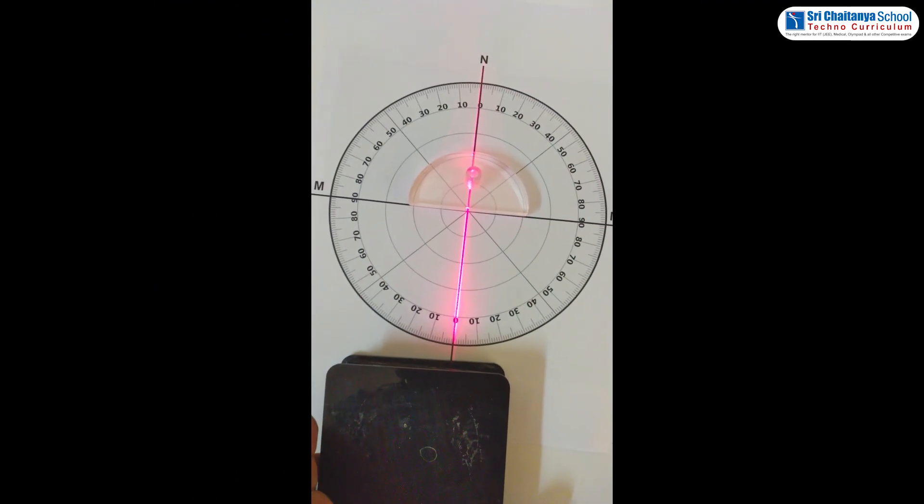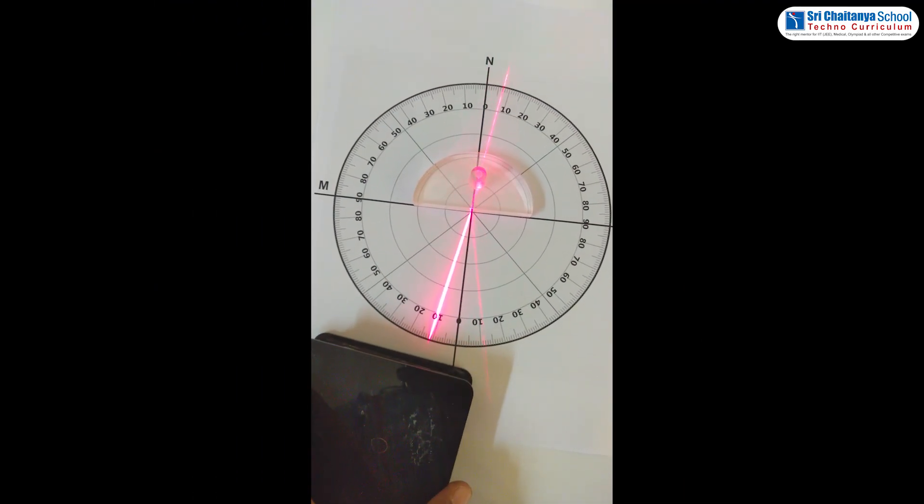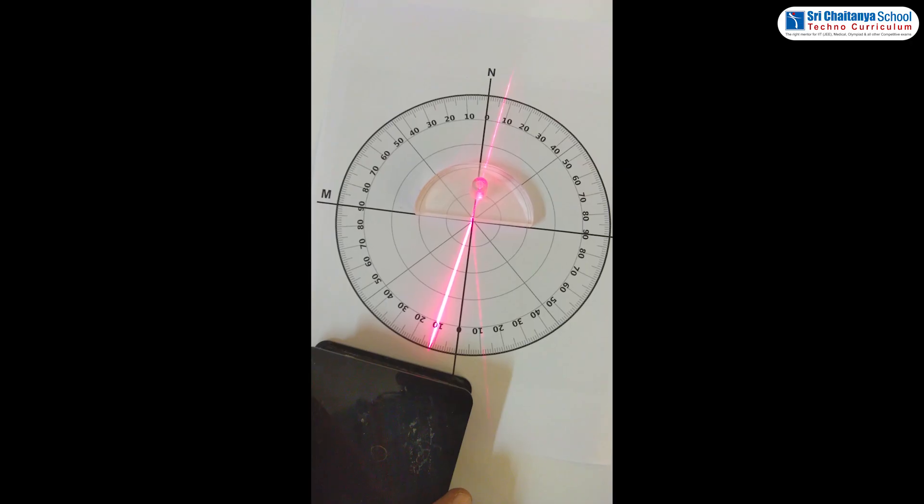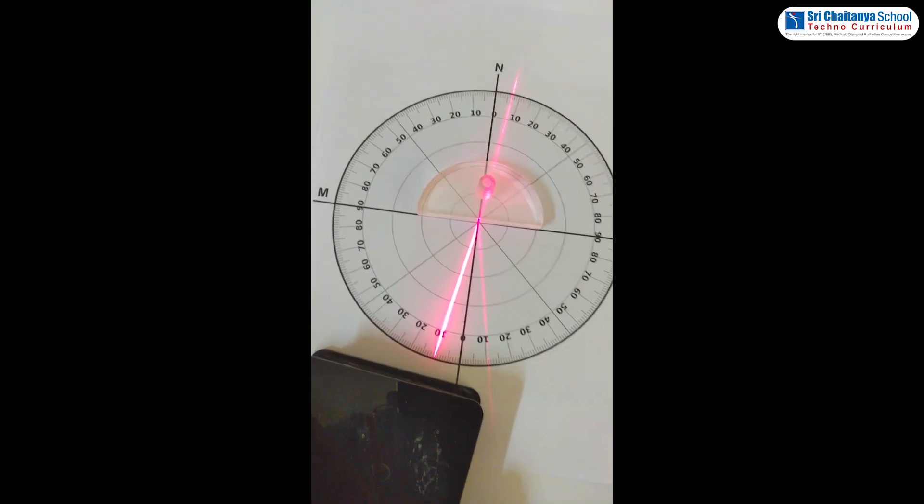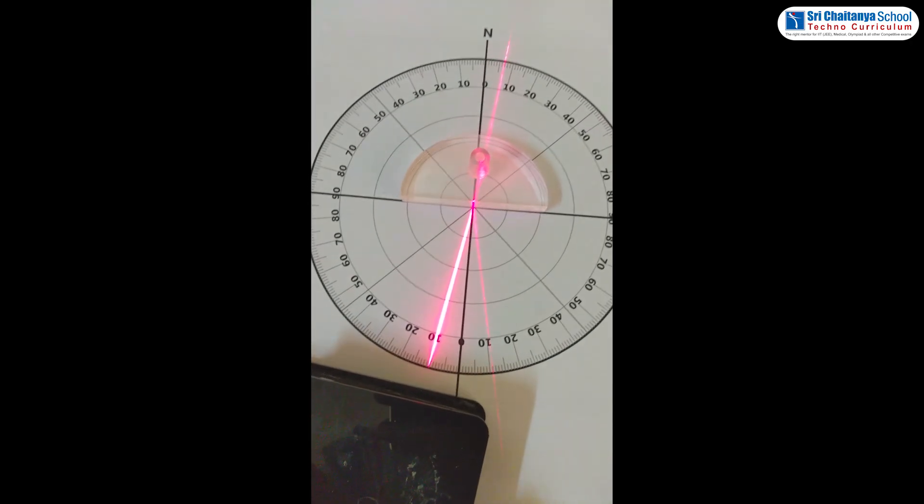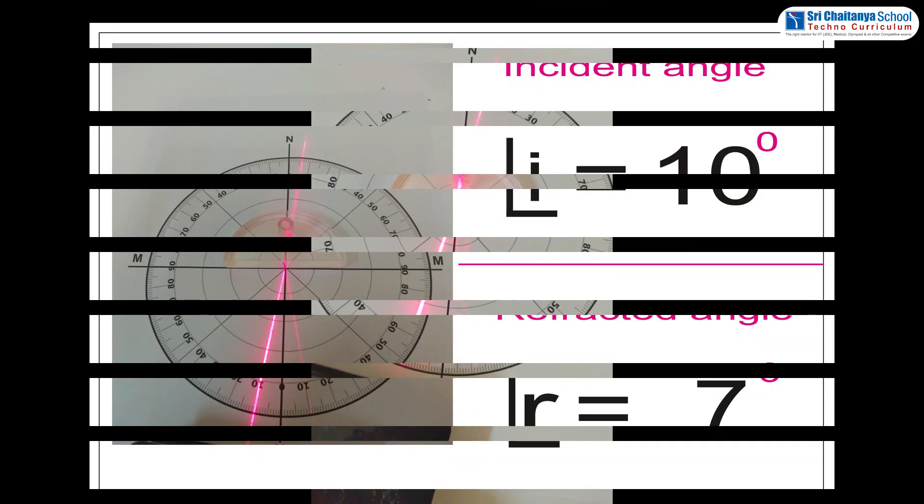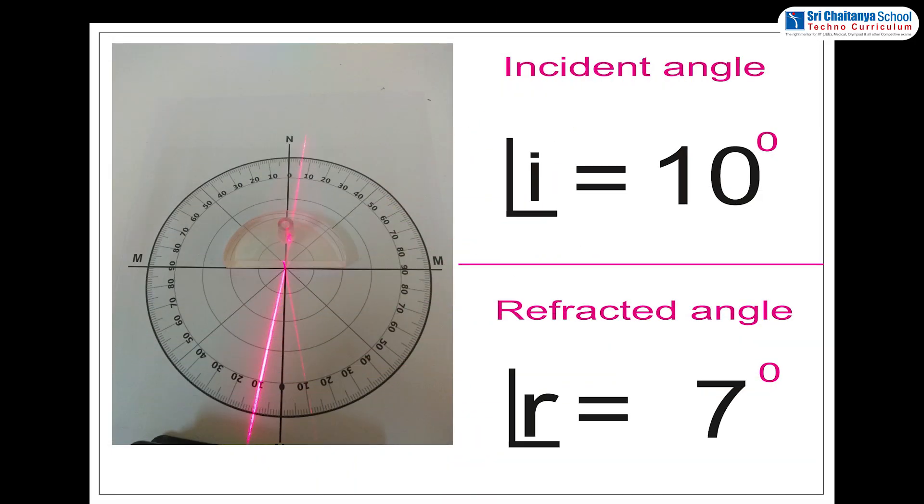Now, let us place the laser light at 10 degrees angle. Observe the angle of refraction here. The laser light comes out from the semi-circular glass slab and you can find the angle of refraction. Here it shows 7 degrees. Note the values.